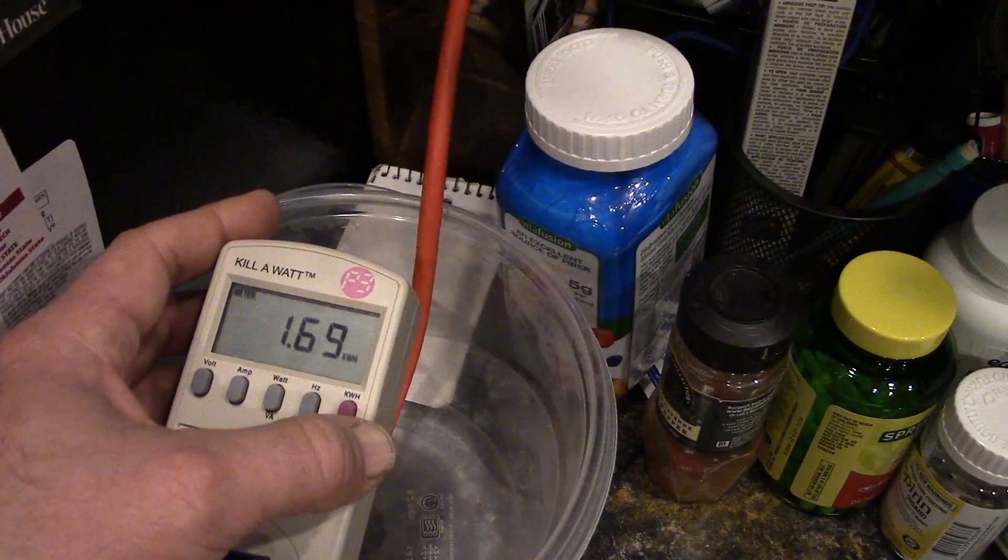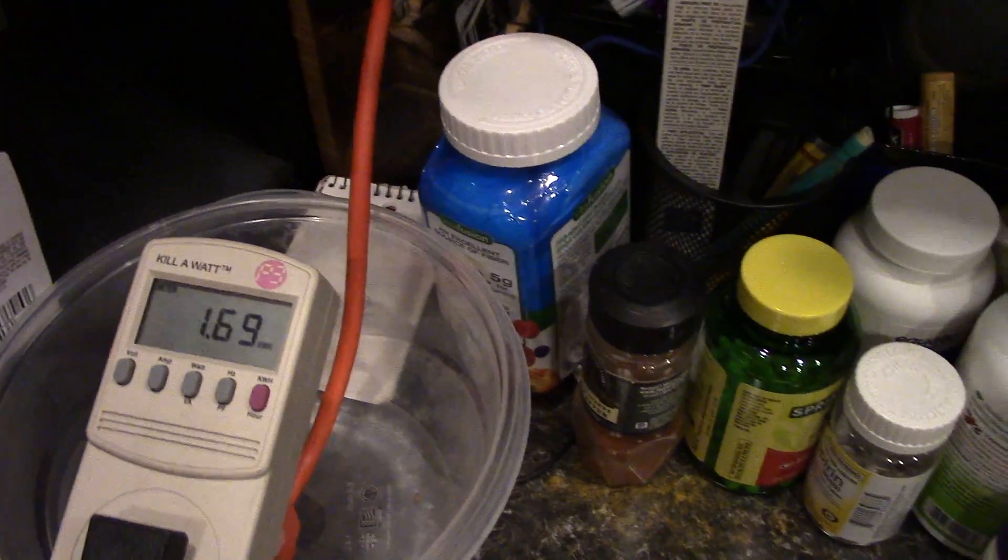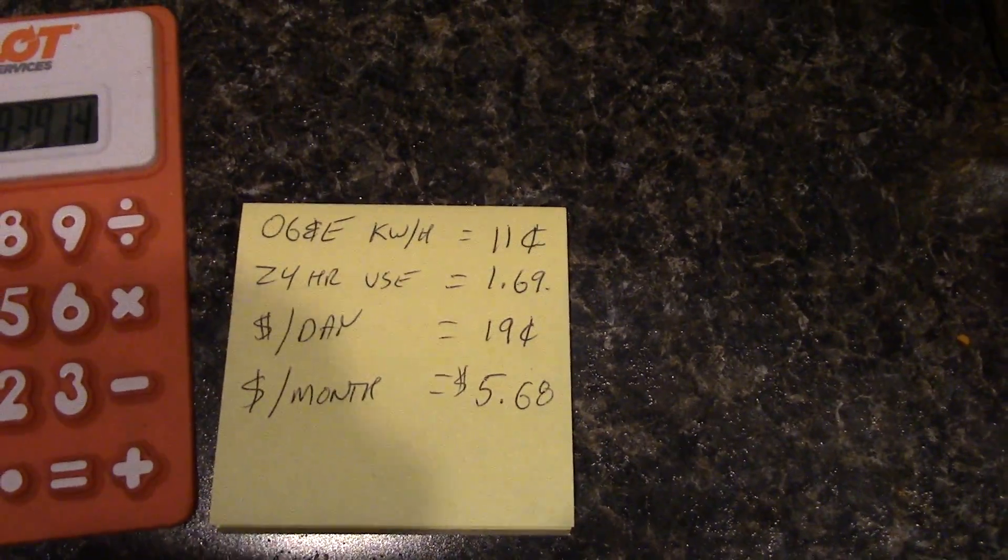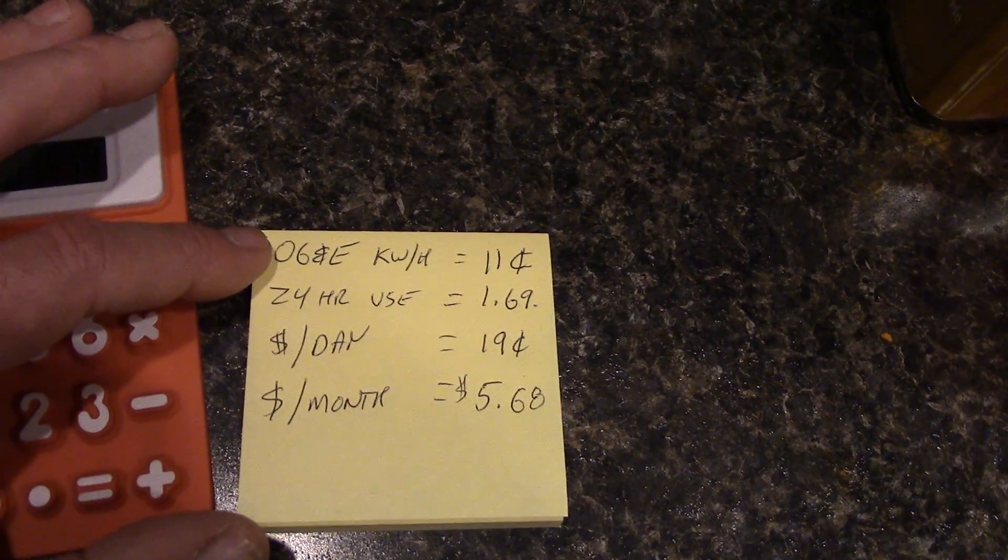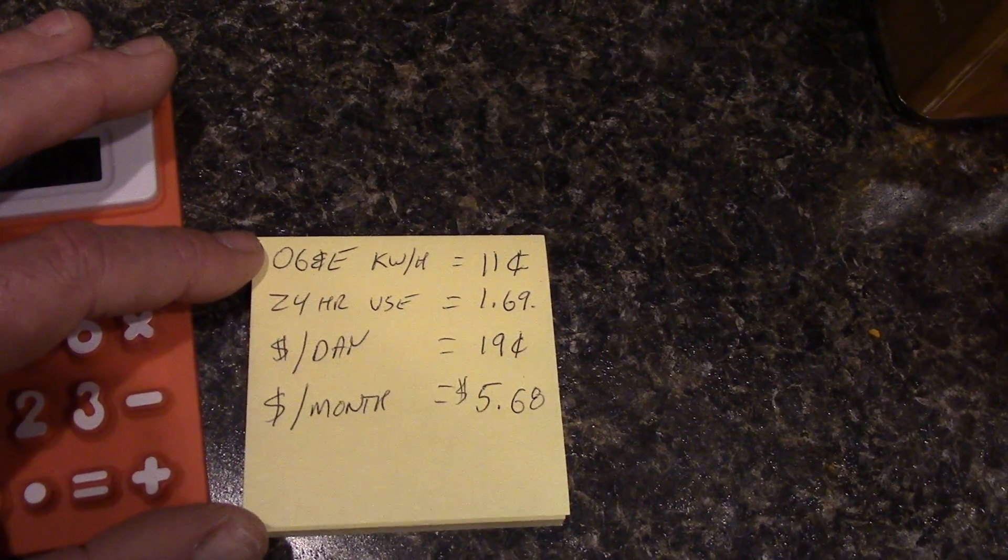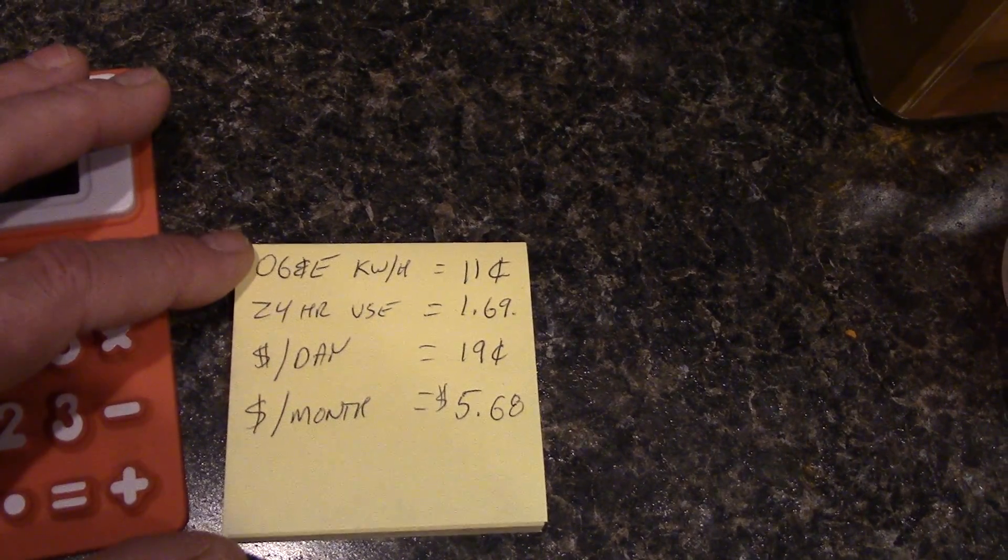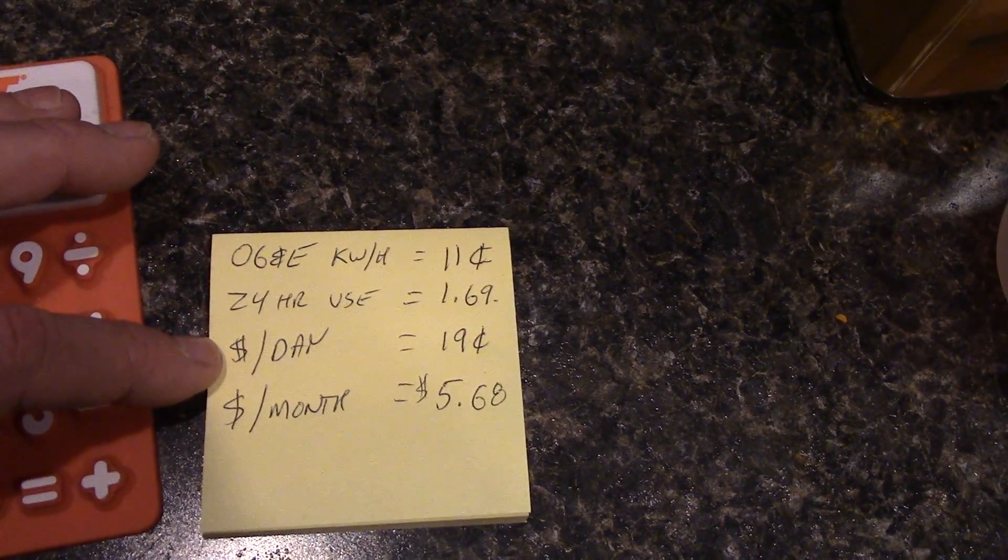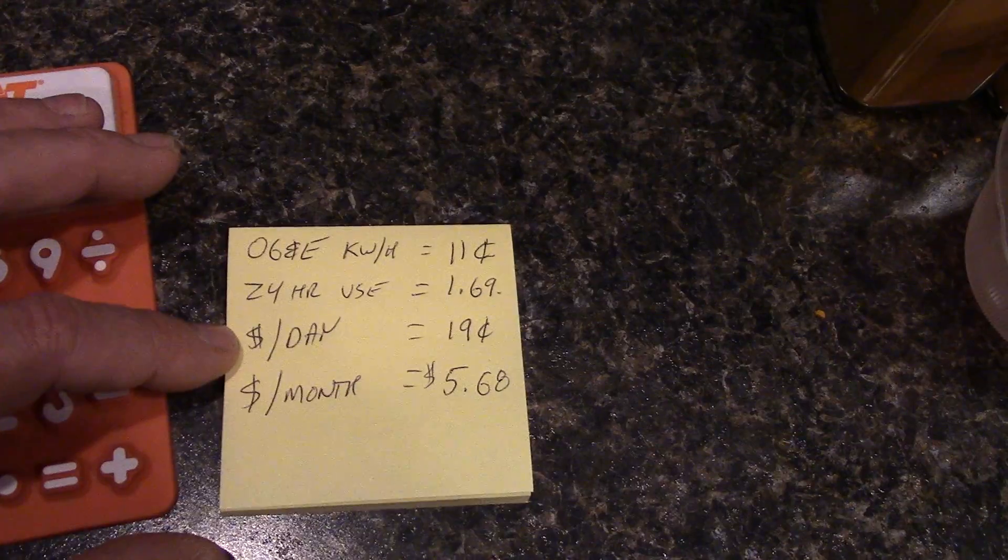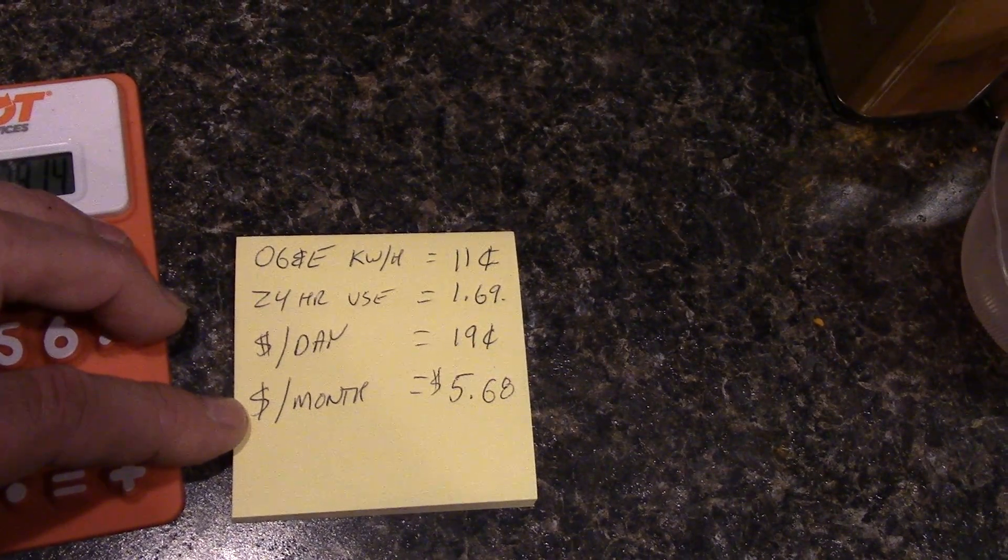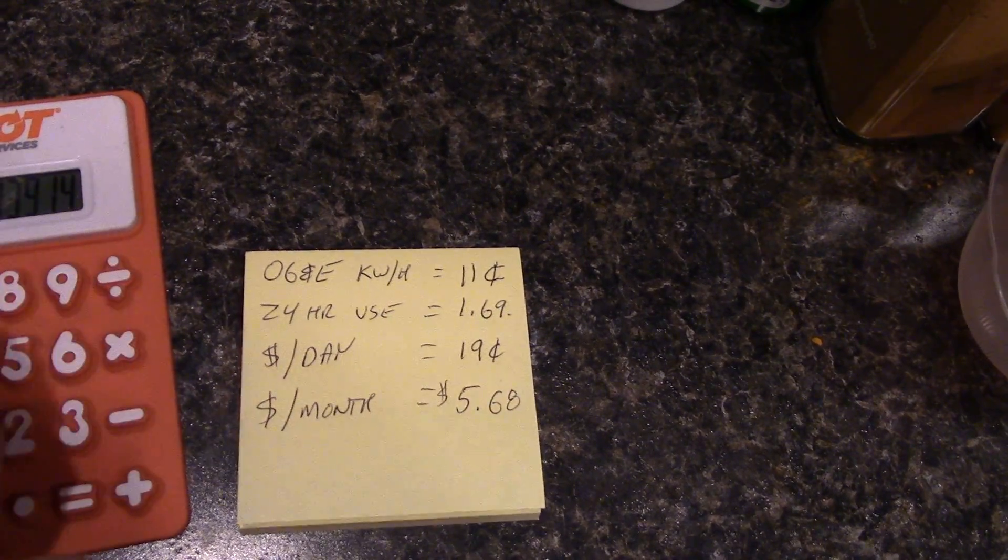I whipped out my electric bill and calculator. In Oklahoma, they charge right now non-peak hours 11 cents per kilowatt hour. I took that 1.69 and multiplied by 11, and it costs me a whopping 19 cents a day to operate this refrigerator. Calculate that into a month and it's $5.68 a month.